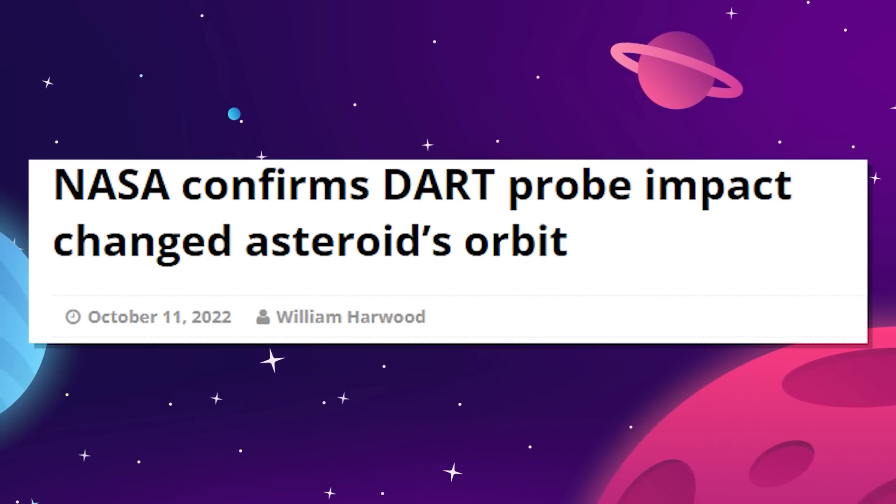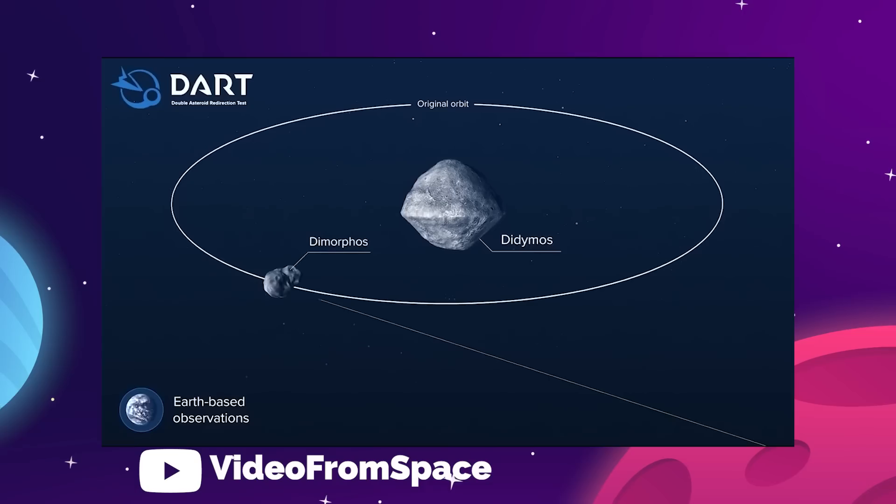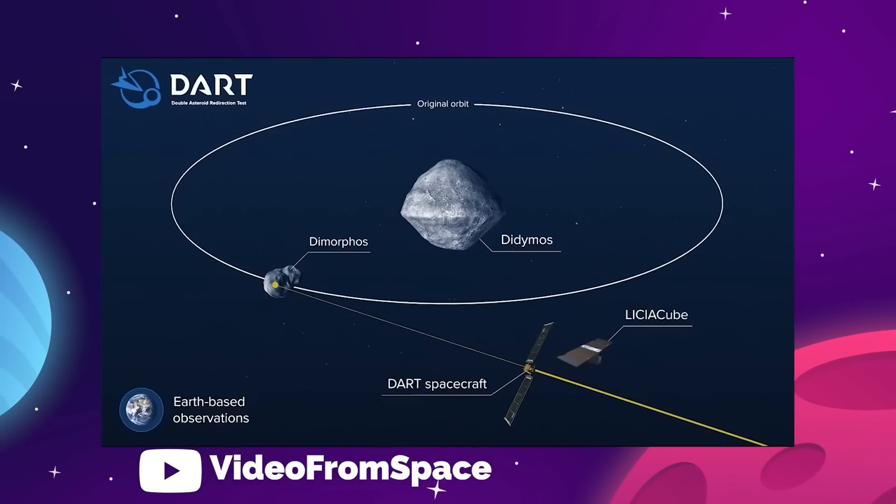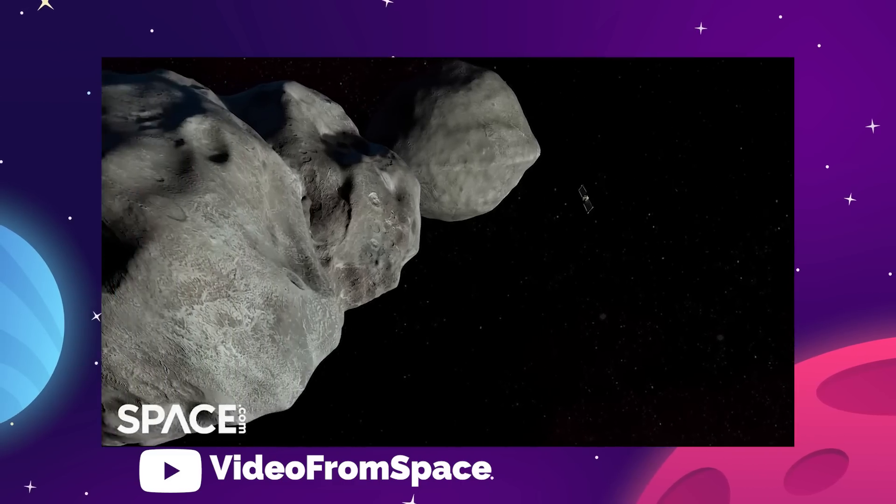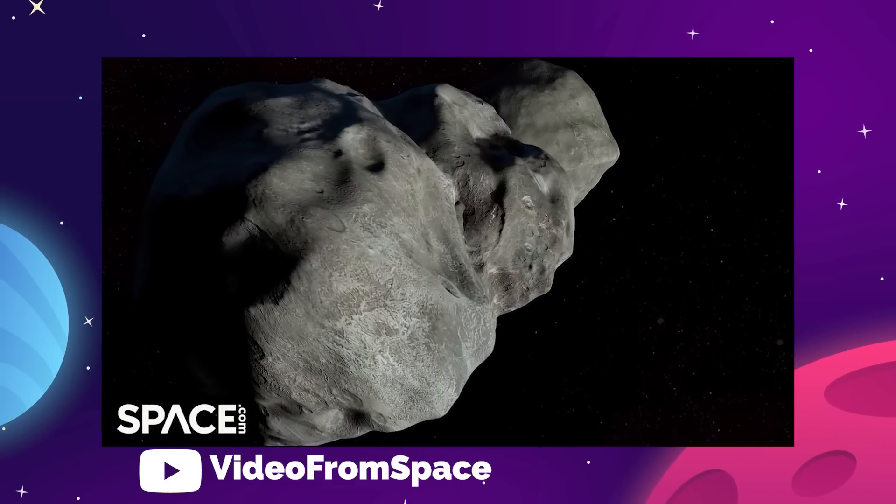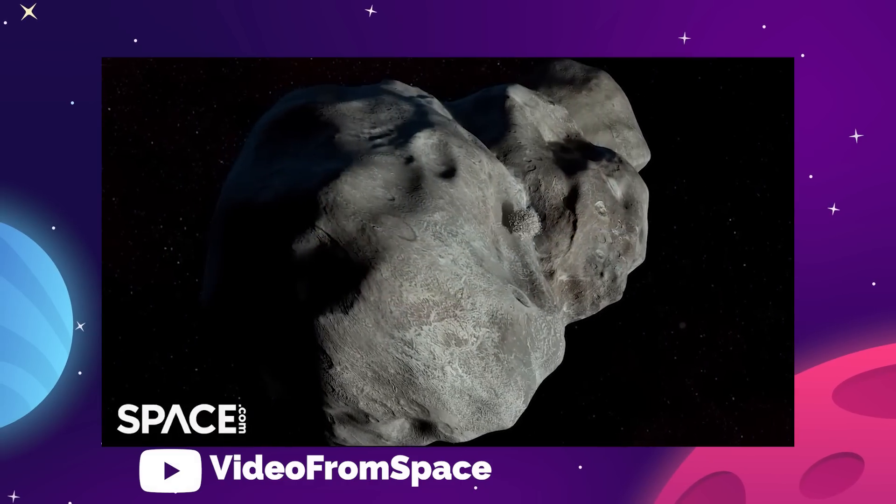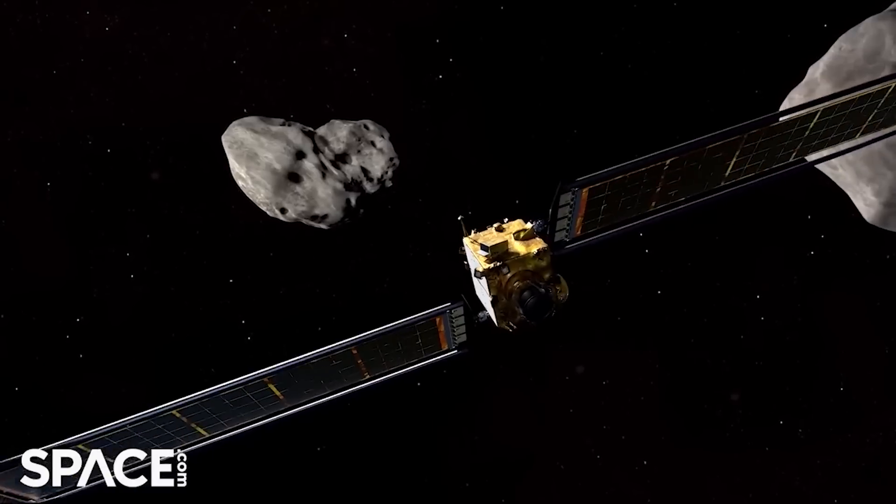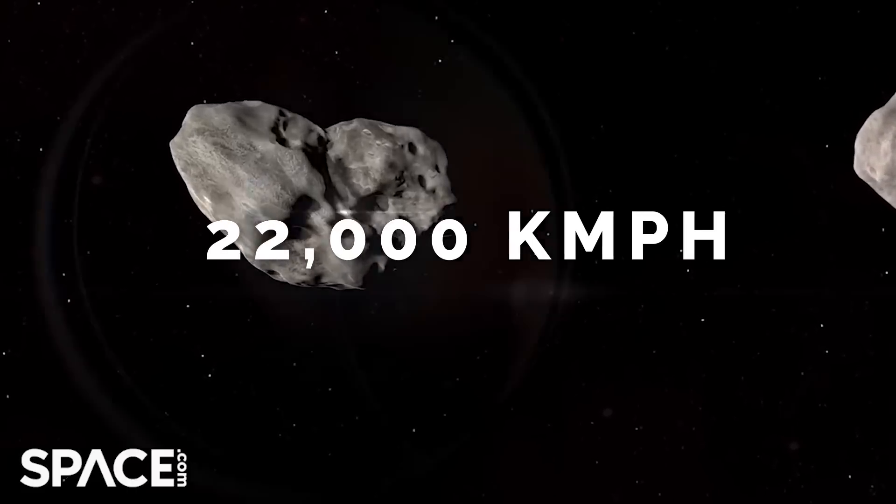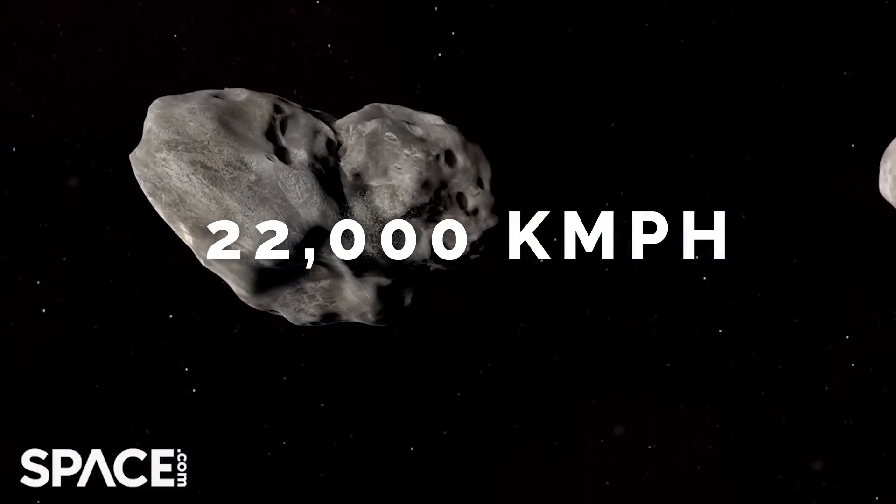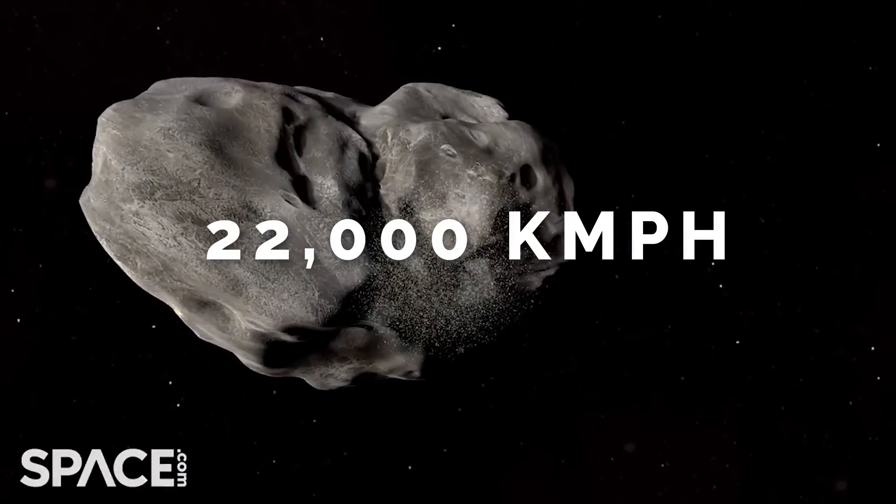The plan had been to take the roughly 570-kilogram impactor satellite and smash it into the asteroid Dimorphos, a 160-meter-wide rock orbiting the larger asteroid Didymus. On September 26th, the vending machine-sized satellite slammed into Dimorphos at over 22,000 kilometers per hour and hit perfectly on target.